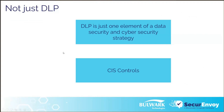Things like the CIS controls from the Center for Internet Security are worth looking at as part of your overall cyber defense strategy. These are a prioritized set of safeguards to mitigate the most prevalent cyber attacks against systems and networks, mapped to and referenced by multiple legal, regulatory, and policy frameworks. Data features in multiple controls, and CIS Control 3 is all around data protection.